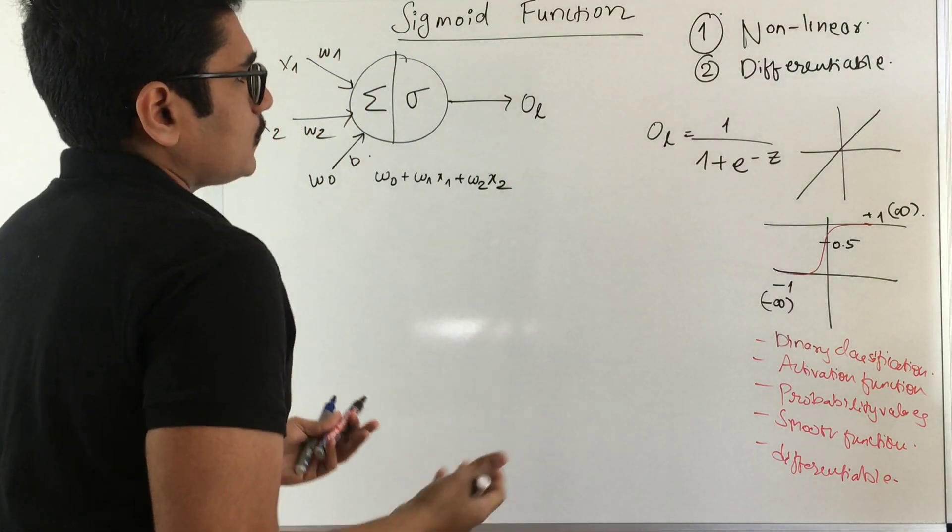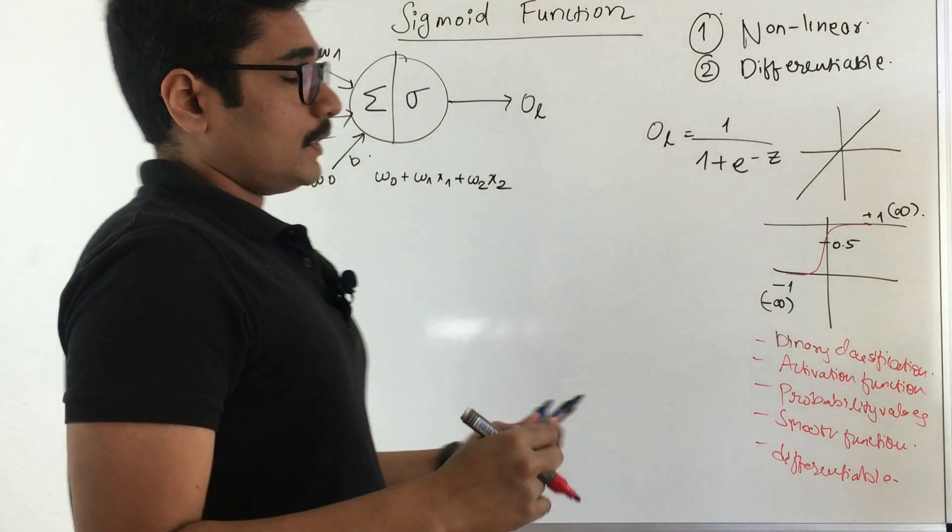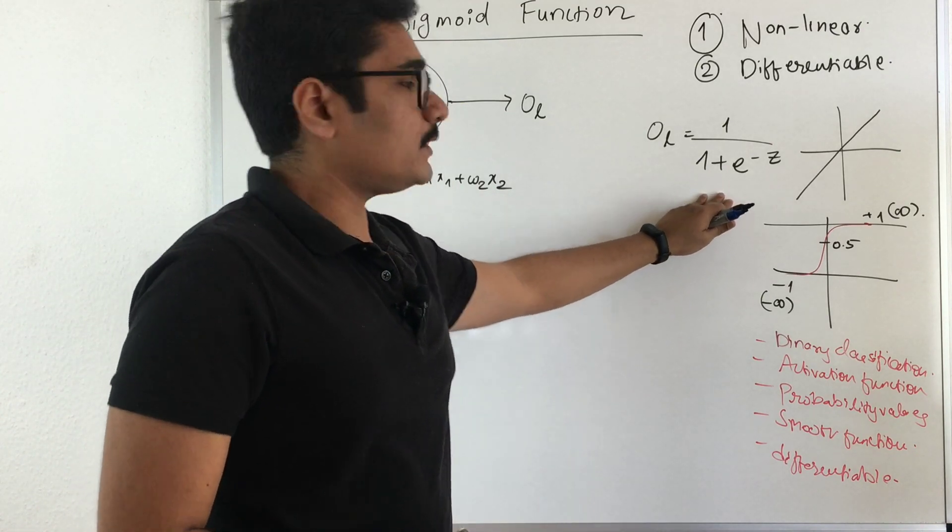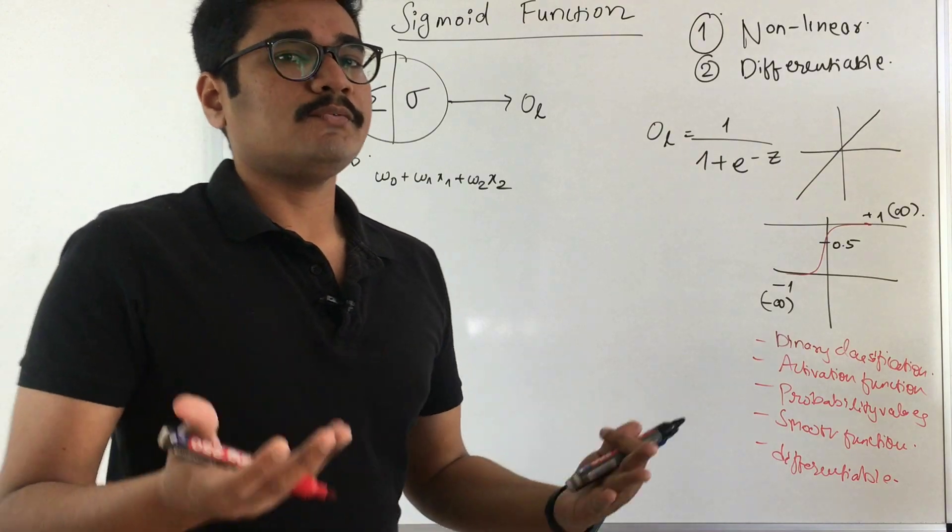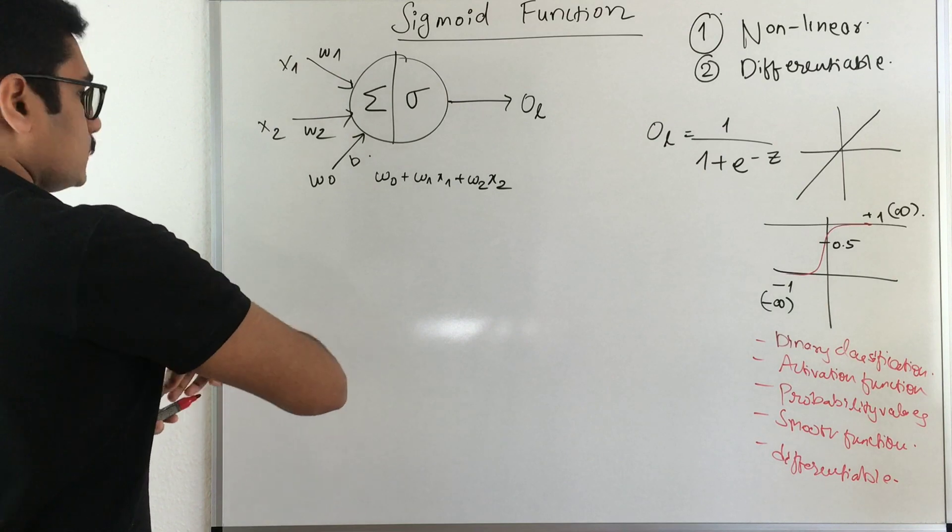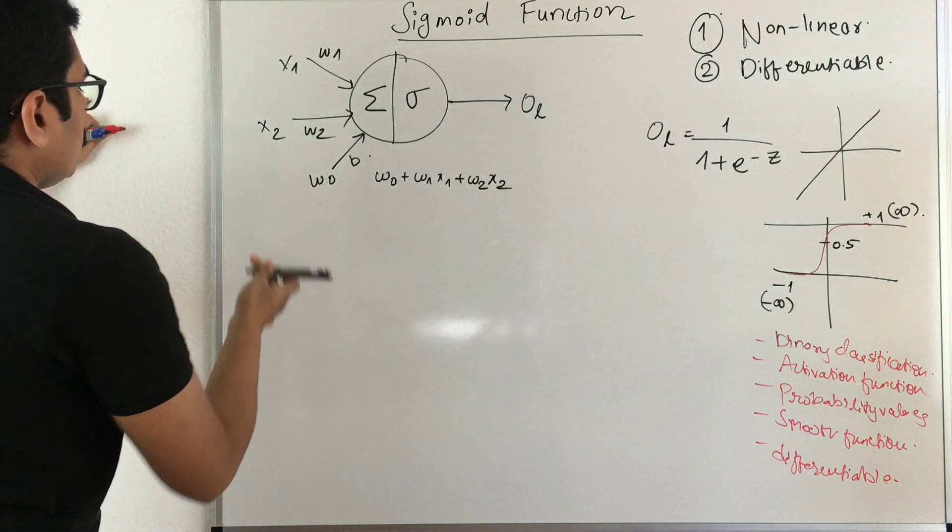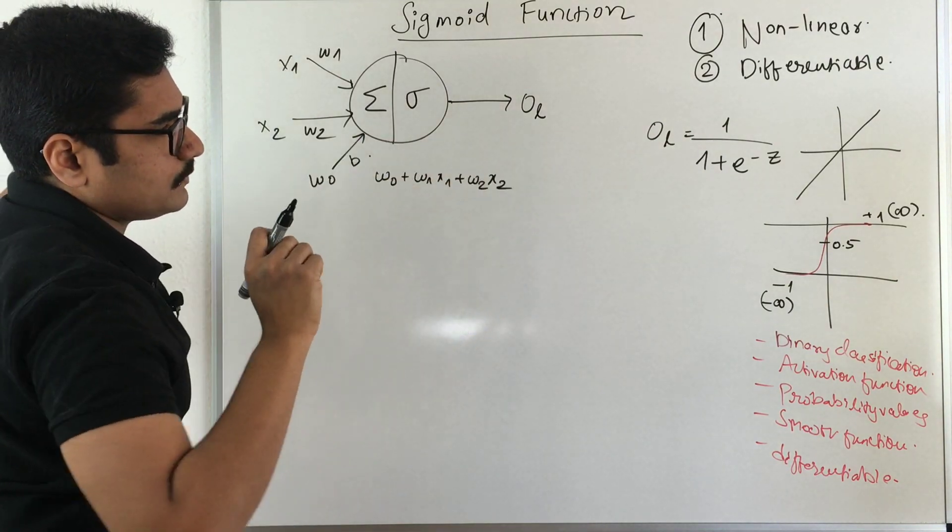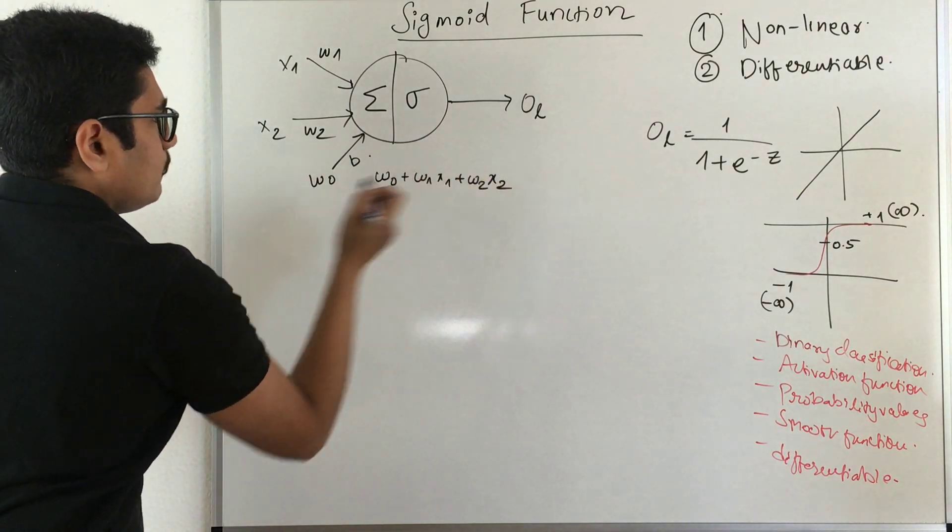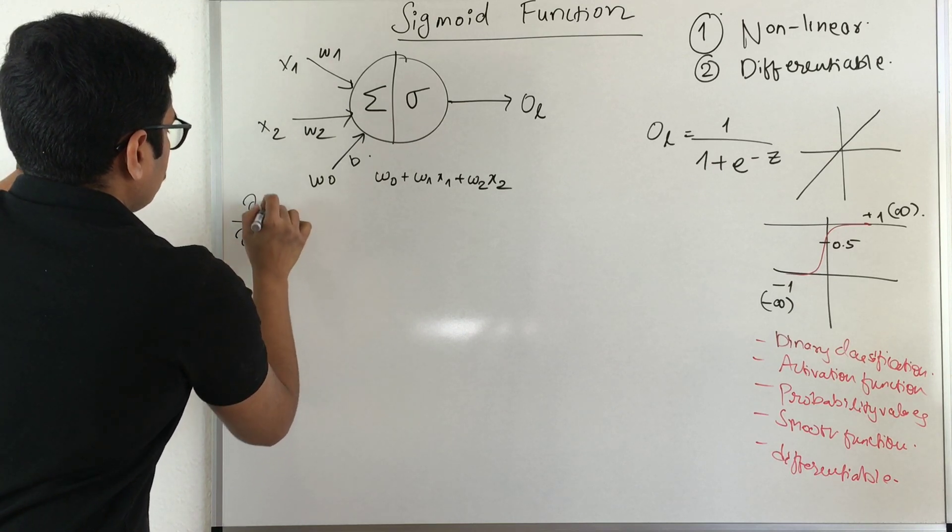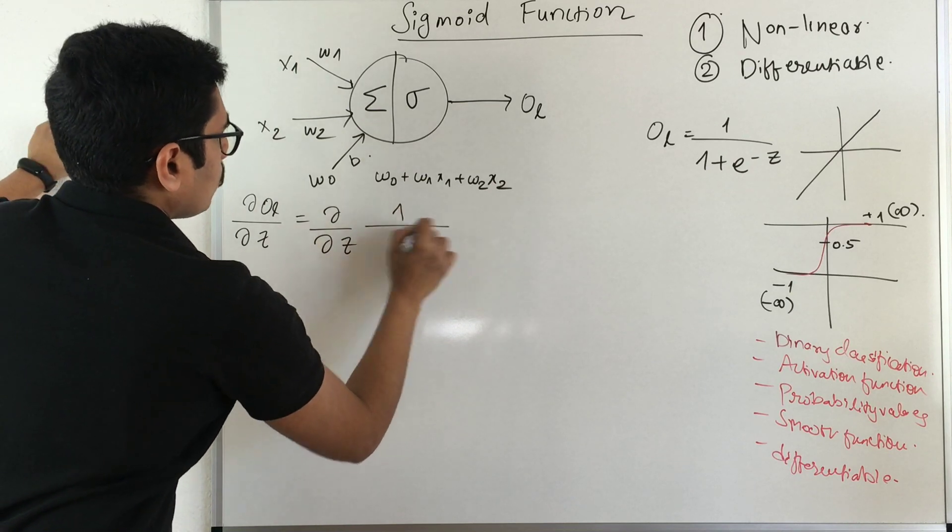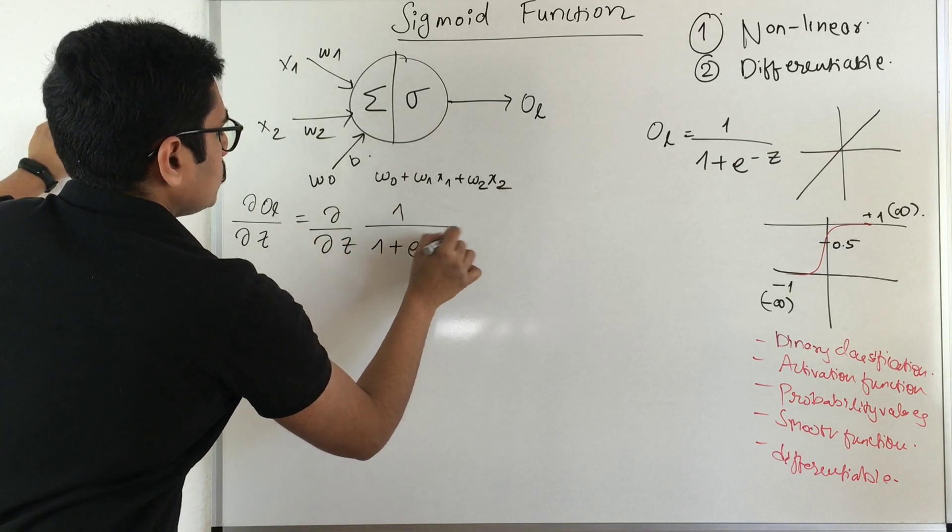We now compute the derivative of this particular output function and see how it looks graphically. We have ol, and we differentiate with respect to z. If I write this as 1/(1 + e^(-z)).